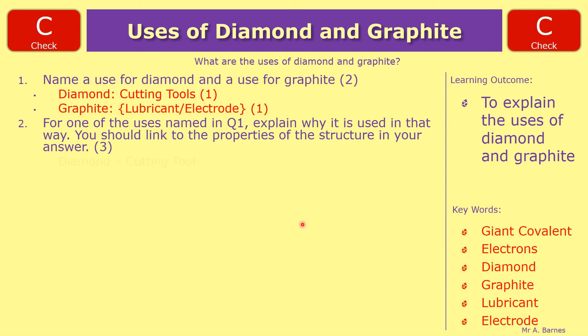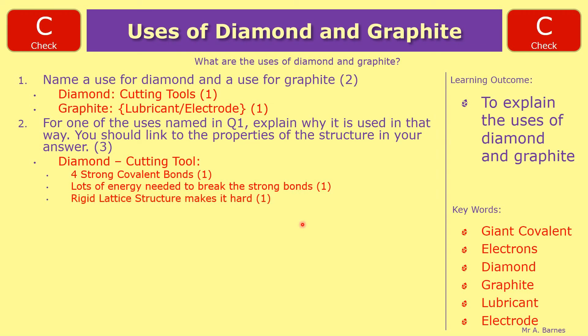Moving on to question two then. If we start off with cutting tools, this is worth three marks, so there are three things you could have put. First one, and the key thing, is that in diamonds you have four strong covalent bonds for every carbon atom. That means that lots of energy is needed to break those strong bonds. Therefore, it's a rigid lattice structure, which makes it hard, which makes it useful in cutting tools.